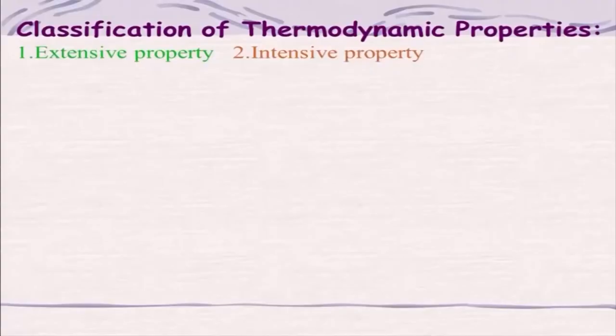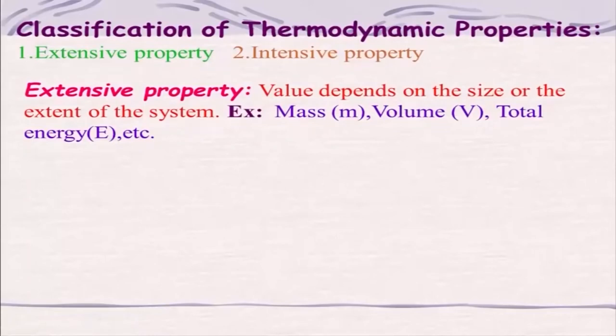When we talk about thermodynamic properties, we will have to understand what kind of property it is. Properties can be broadly classified into two categories: intensive property and extensive property. An extensive property depends upon the extent of the system — that means it depends on the size of the system. Examples include mass, volume, and total energy.